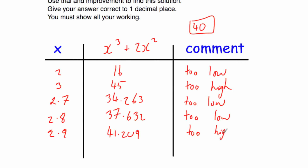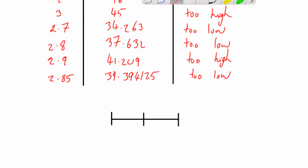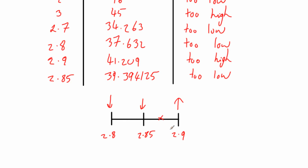The answer is between 2.8 and 2.9. Let's try the checker 2.85: 2.85 cubed plus 2 times 2.85 squared equals 39.394125 — too low. So 2.8 is too low, 2.9 is too high, and 2.85 is too low. The answer would be between 2.85 and 2.9, so it's closer to 2.9. Our correct answer is 2.9.